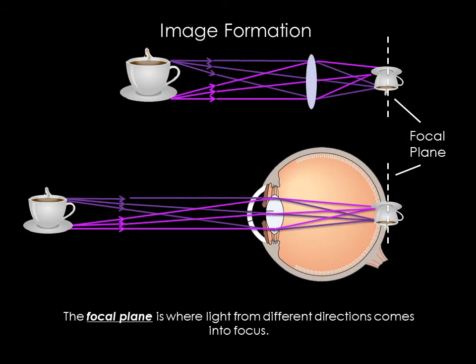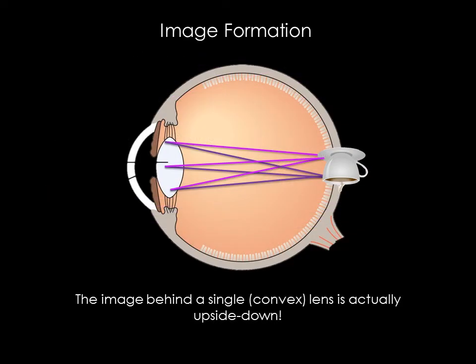The lens in your eye functions the same as a lens in a magnifying glass or telescope. All lenses bend light — this bending of light is called refraction. Parallel rays of light, like those coming from a distant star, converge to a point called the focus or focal plane. The fact that parallel rays converge to a sharp focus is why distant stars appear as points of light to our eyes or in photographs. The image formed by a lens is actually upside down, and our brains flip it right side up.